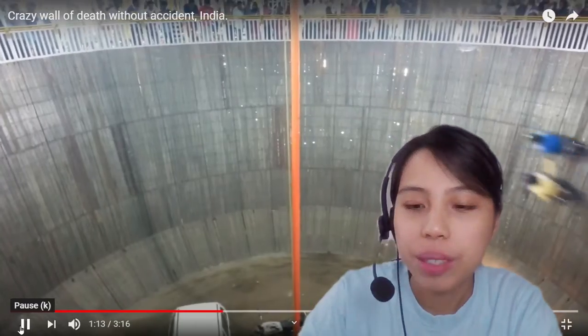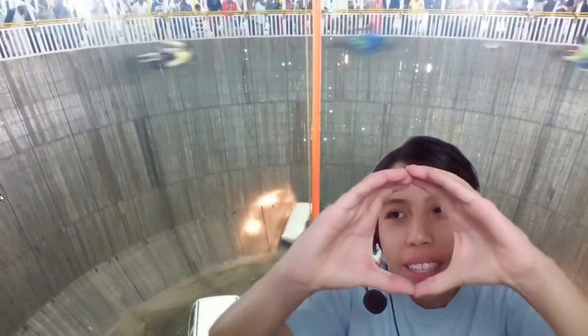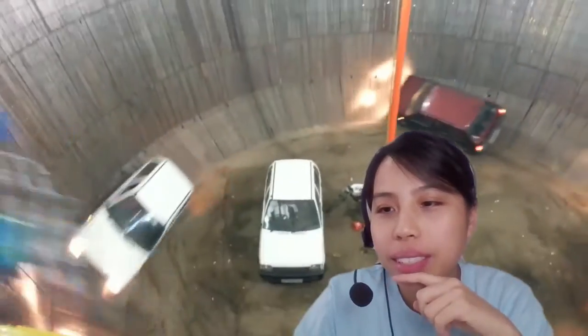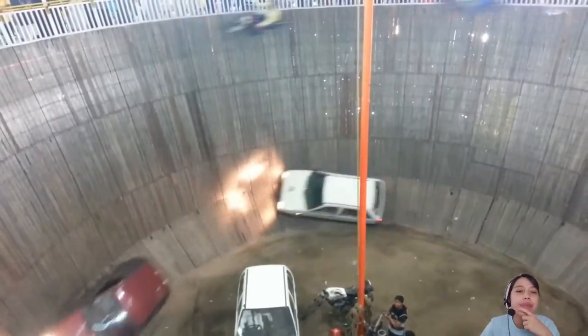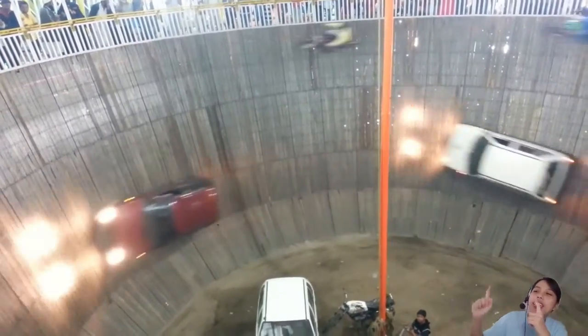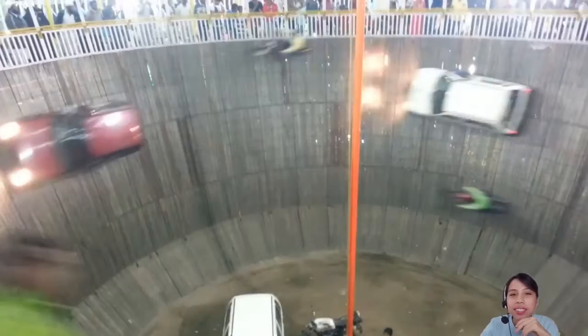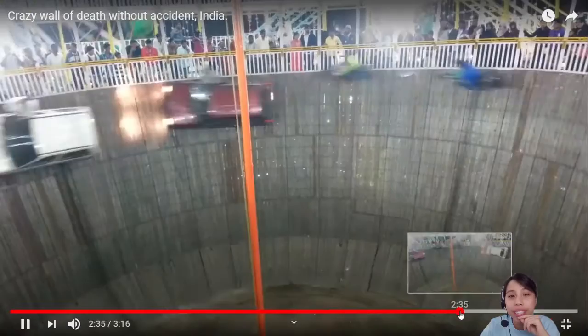This is a stunt which you may see in some circuses or shows. It's a container and all the cars are going in a circle around it. There's bikes, the cars are going faster and faster, then they get higher and higher. At some point, these cars and bikes are traveling vertically.